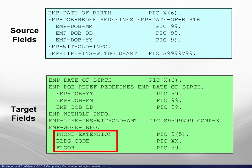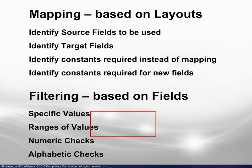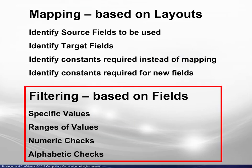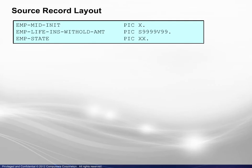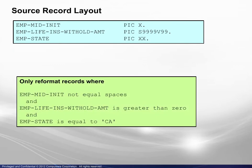There are three target fields with no corresponding source fields, so we must determine their values. We have chosen all 9's for the phone extension, ZZ for the building code, and 0 for the floor number. Now we will look at the filtering to be used in this example. We will examine three fields in each source record and only reformat those records meeting these conditions. The employee's middle initial must not be blank, their life insurance withholding amount must be greater than 0, and the state they live in must be California.